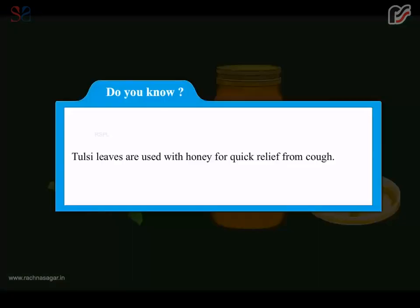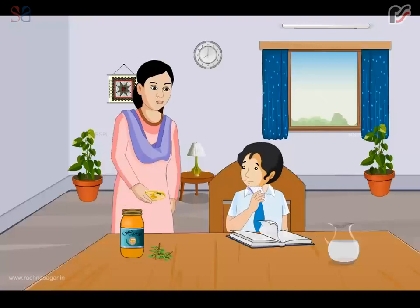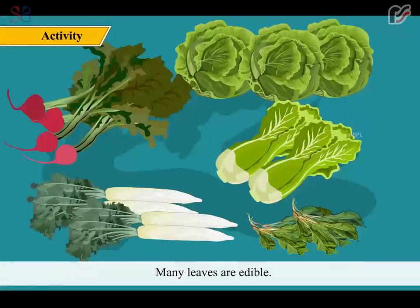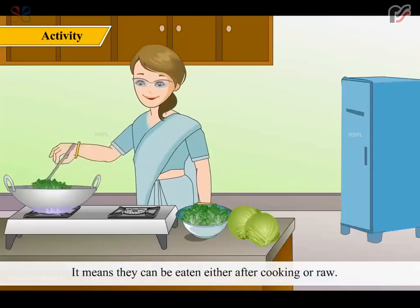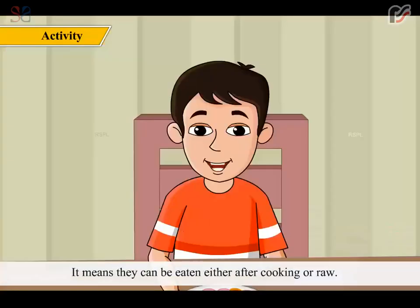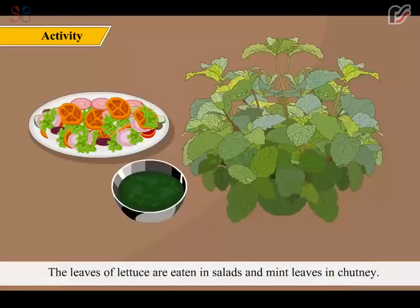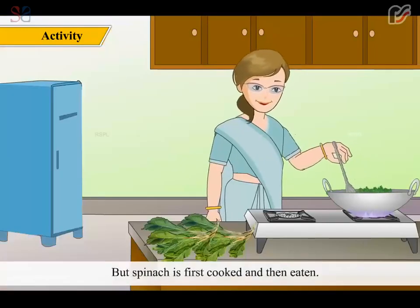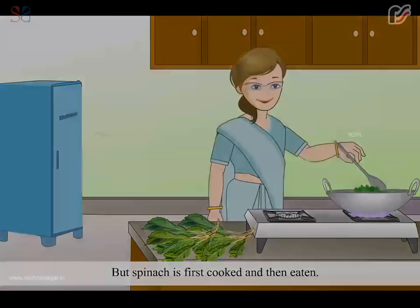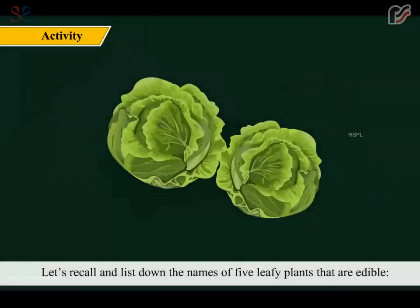Do you know? Tulsi leaves are used with honey for quick relief from cough. Many leaves are edible, which means they can be eaten either after cooking or raw. The leaves of lettuce are eaten in salads and mint leaves in chutney. But spinach is first cooked and then eaten.